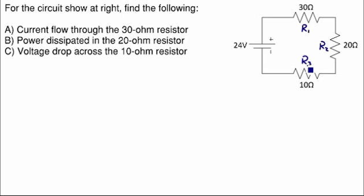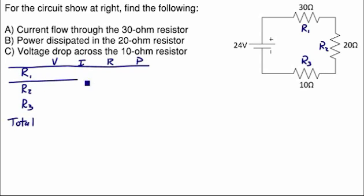We can find all of this information by making our VERP table. We start out by listing all of our circuit elements, R1, R2, R3, and the total as our row headings. Then for our columns we have our voltage in volts, our current in amps, our resistance in ohms, and our power dissipated in watts.